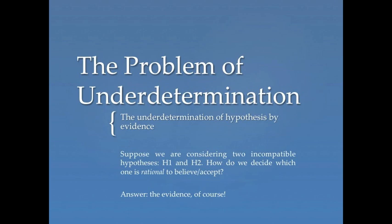Suppose, as is common in science, that we're considering two incompatible hypotheses H1 and H2. When we say that H1 and H2 are incompatible, we mean that they both can't be true at the same time — so either H1 is true or H2 is true, perhaps neither is true. A natural answer is to say the evidence determines which one is rational to believe, since evidence gets us to the truth.